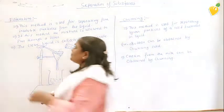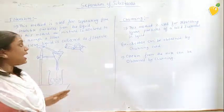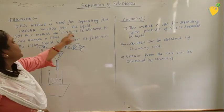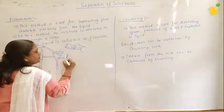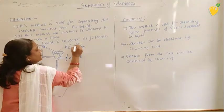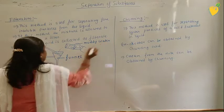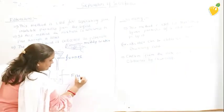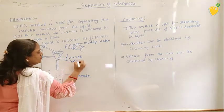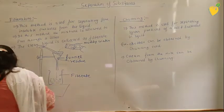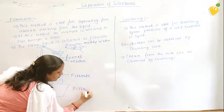This method is used for separating a fine insoluble solid from a liquid, and in this method the mixture is allowed to pass through a filter. This is a funnel, and this is the muddy water. The clear liquid collected is called filtrate, and the solid left behind is called residue. This is the whole process of filtration.